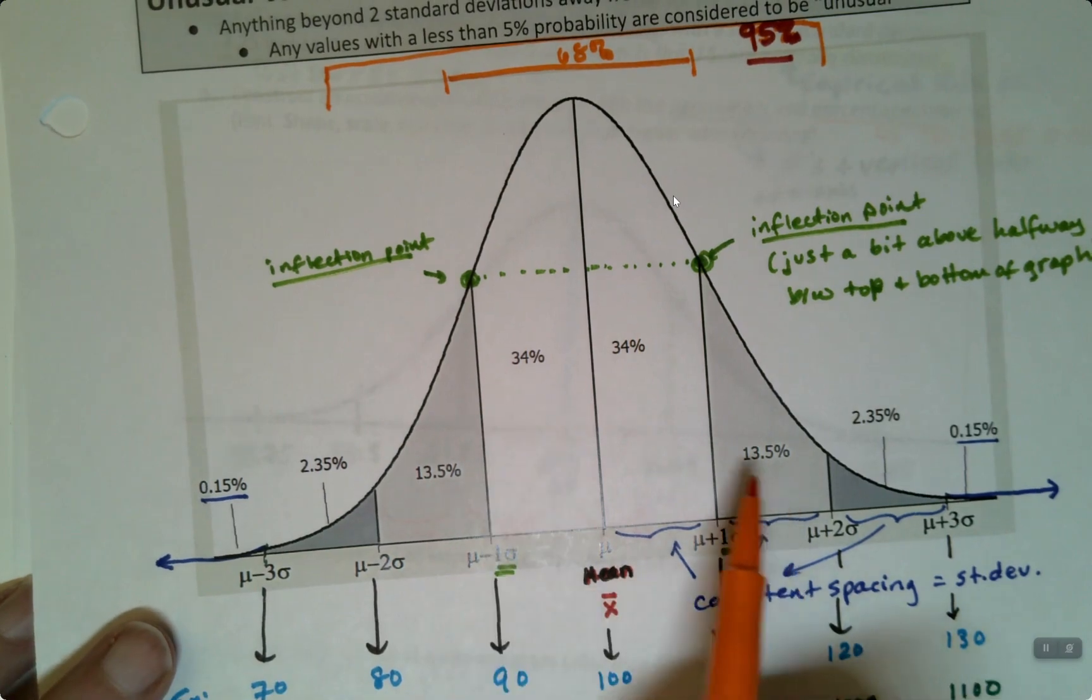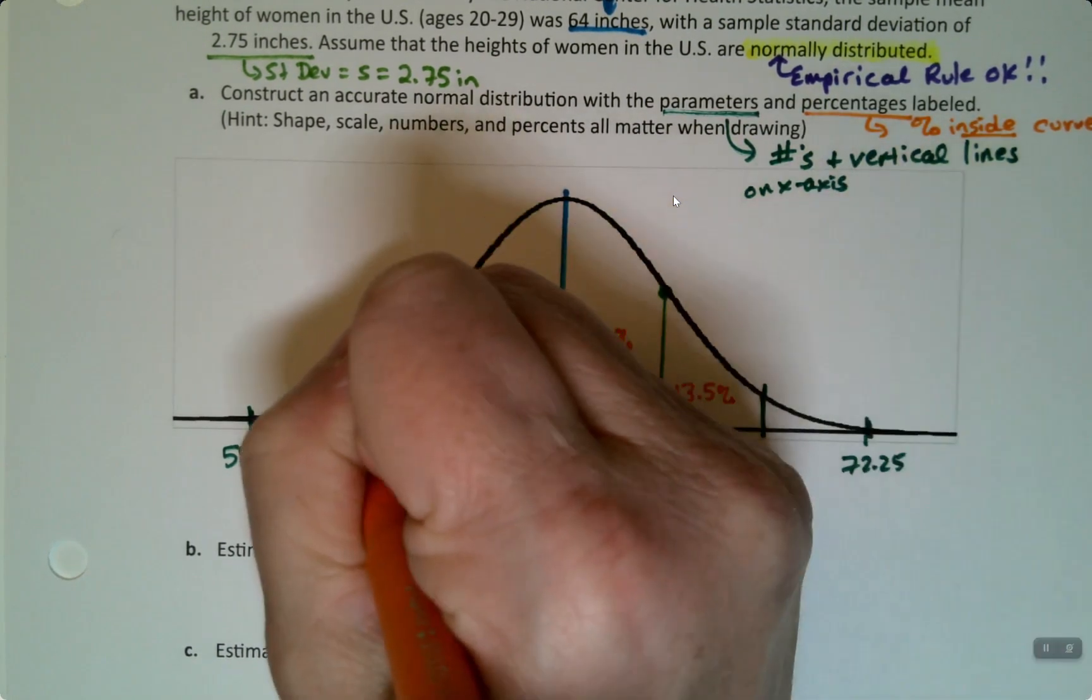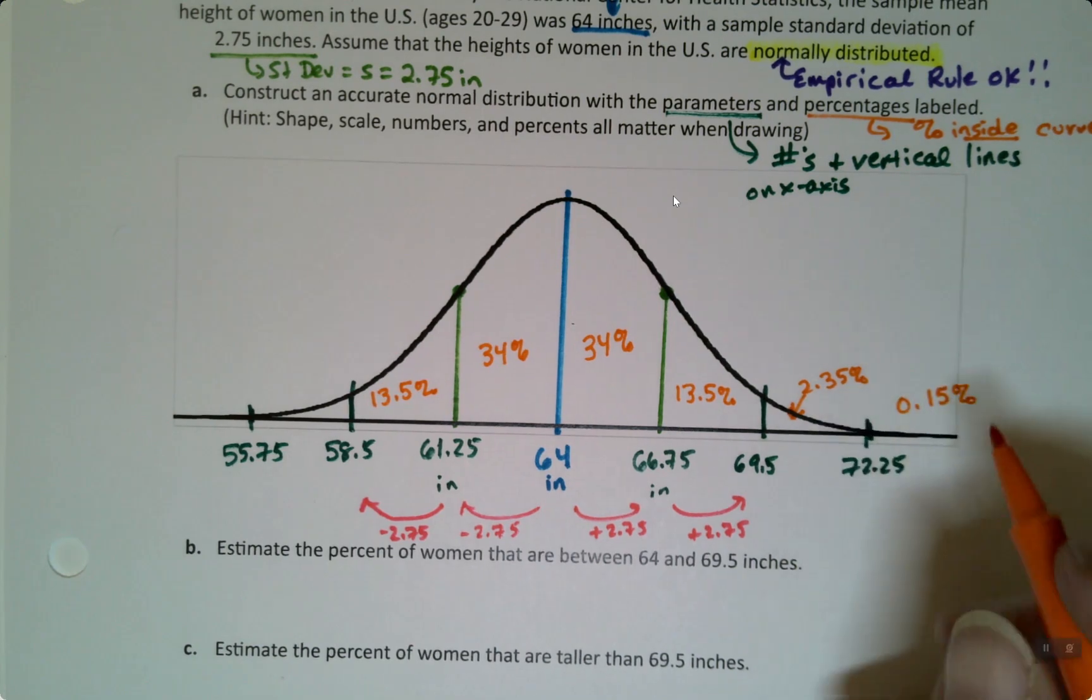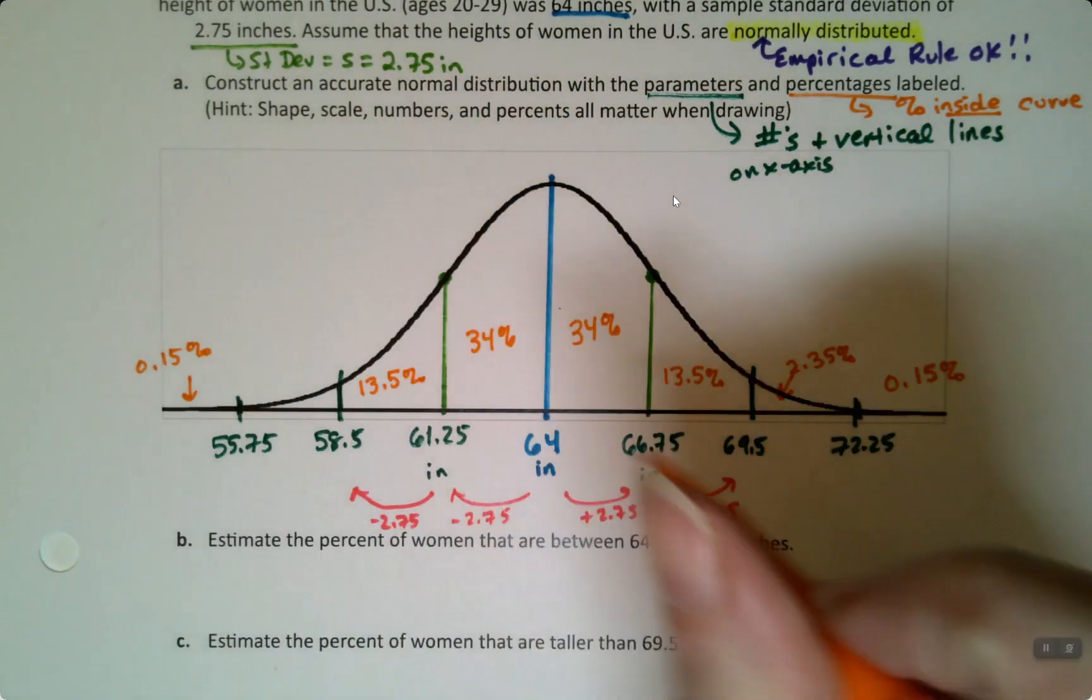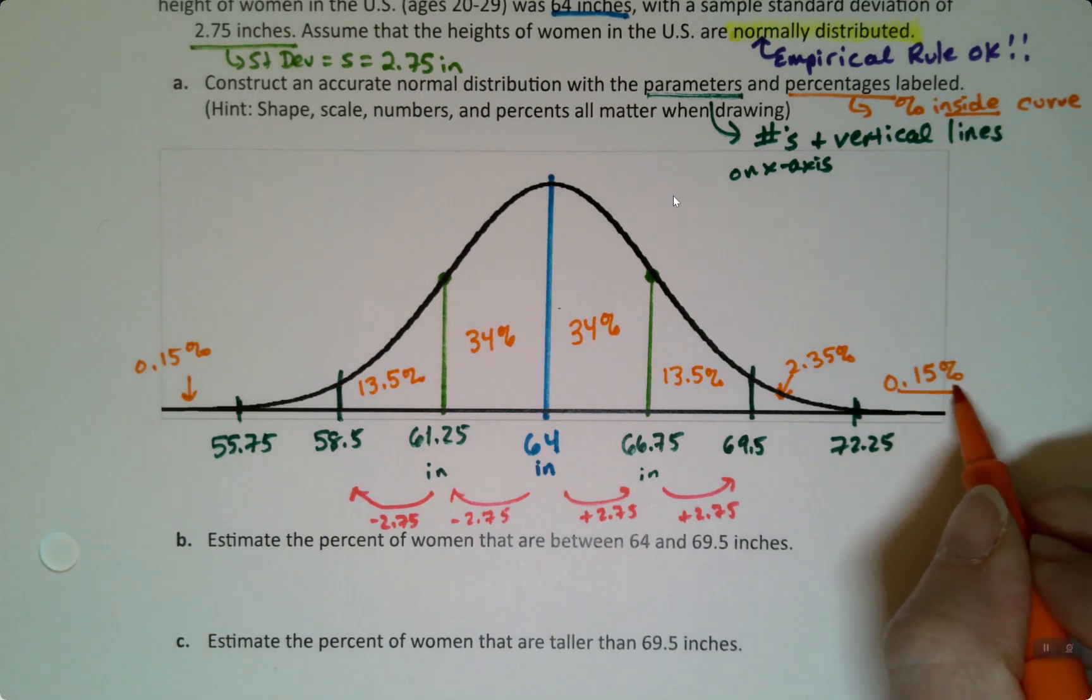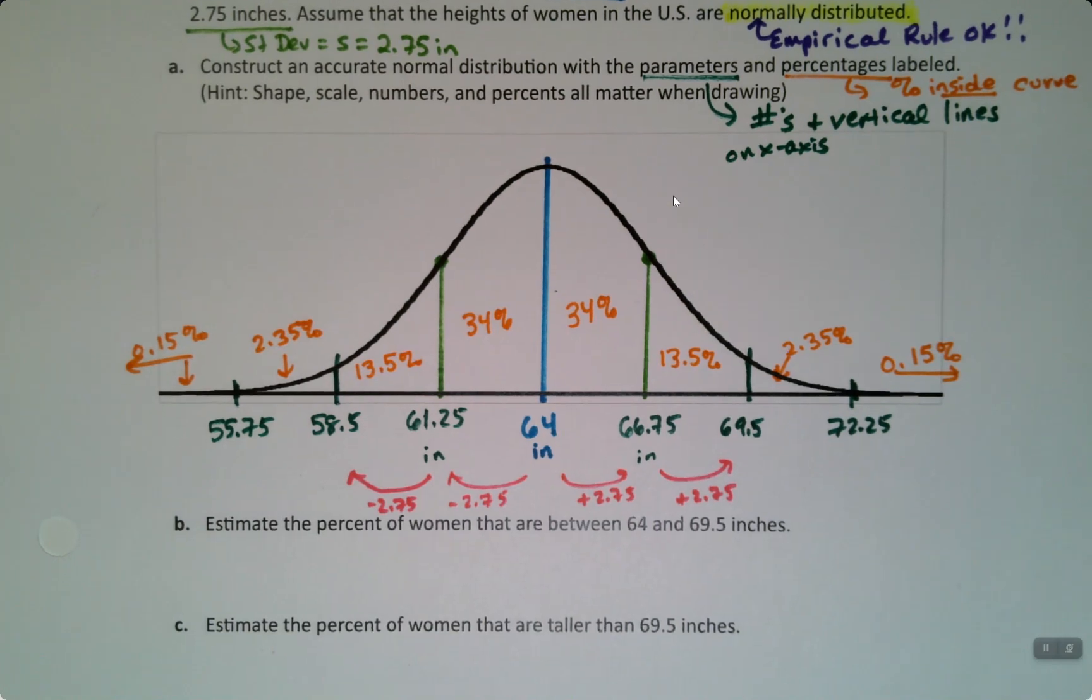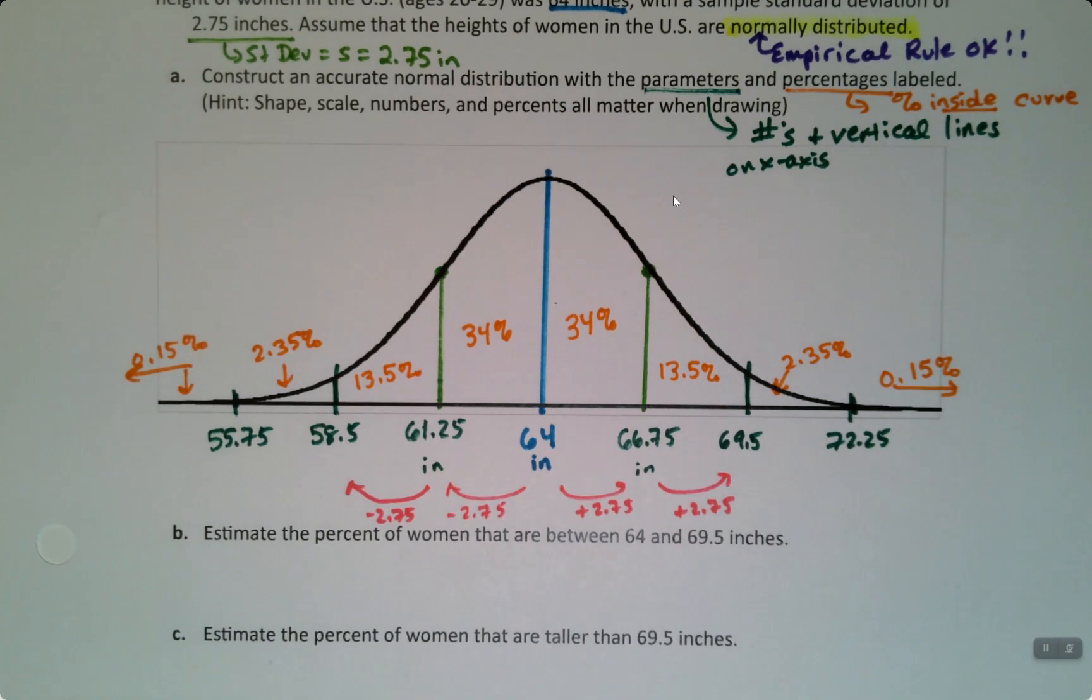And then it says to label the percentages. Well, where's that coming from? That's from the rule itself. Those are the percents inside the curve. And those never change. The vertical lines also never change. What changes is these numbers on the x-axis down here. But this number will be the number it was on the previous page. It's 34%, 34%, 13.5%, 13.5%, and so on. Those are the rounded percentages that our textbook uses. So that is what you are using. This is so small I can't fit it in there, but it's 2.35% and 0.15%.